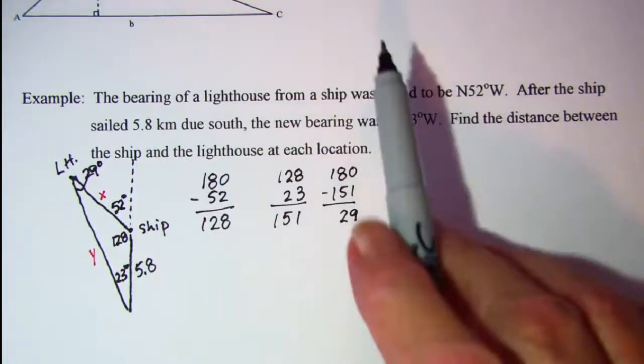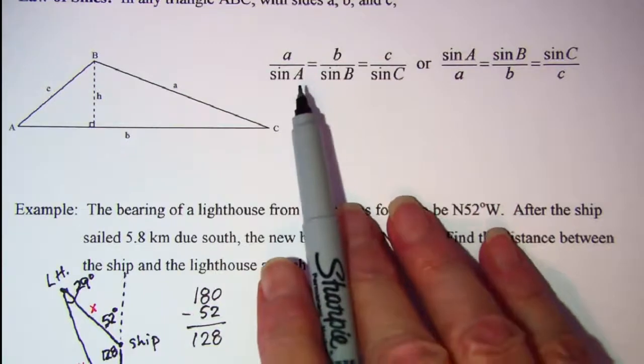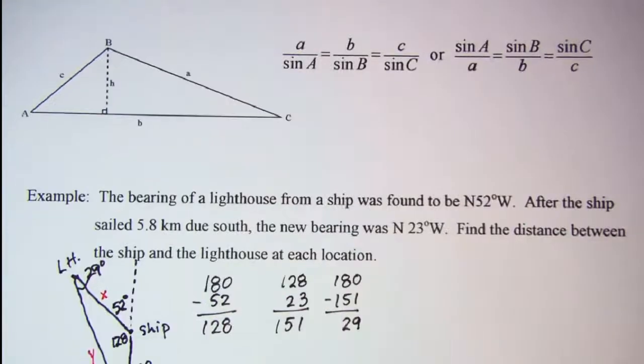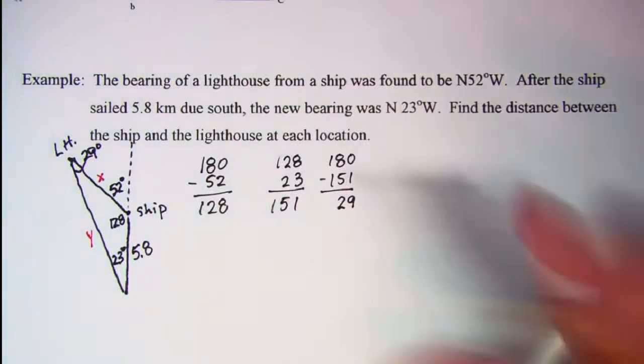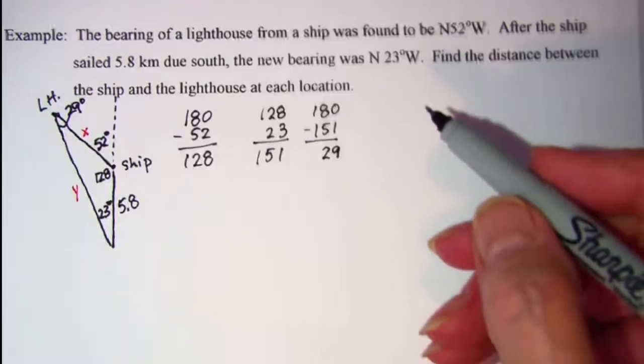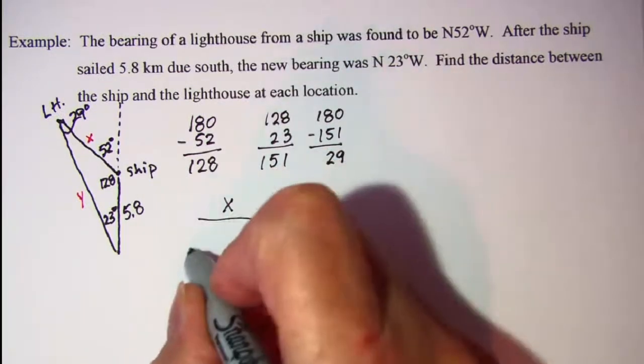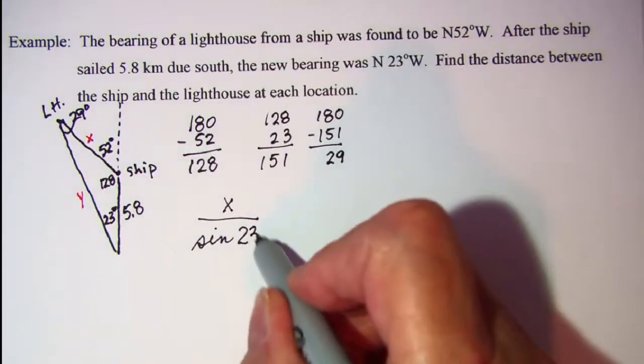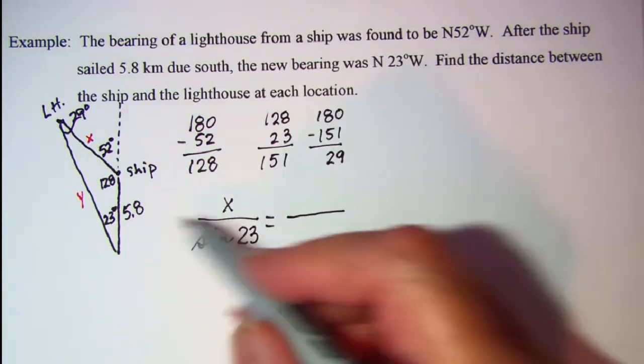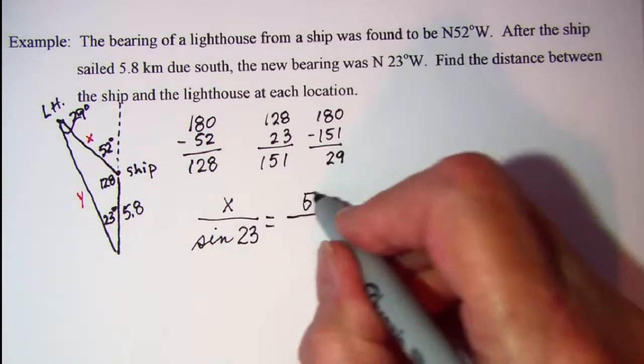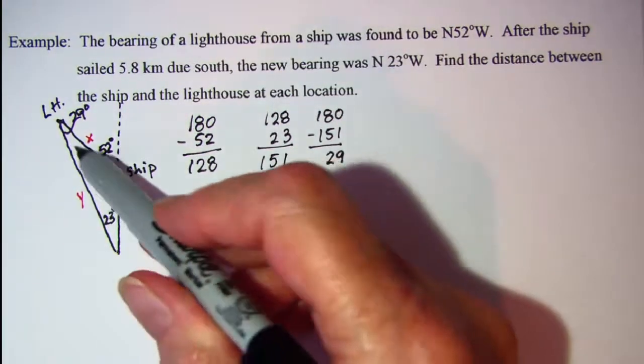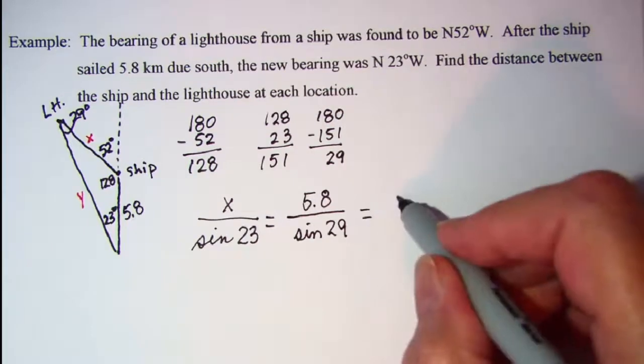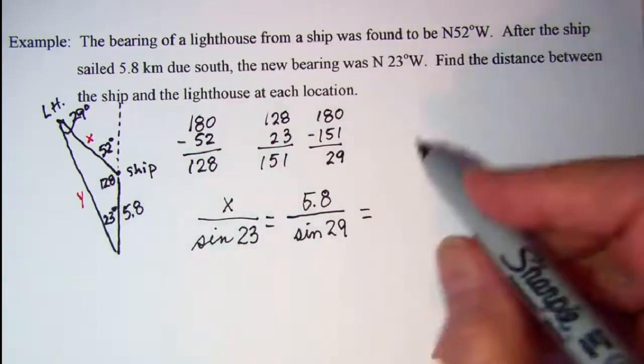So now I don't have my A, B, and C, and angle A, angle B, and angle C, but I can find the sides opposite given angles. So let's go ahead and do that. My X is opposite the angle that measures 23 degrees. My 5.8 is opposite the angle that measures 29 degrees, and my Y is opposite the angle that measures 128.